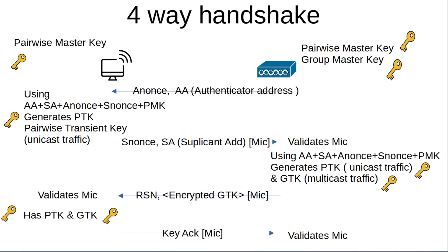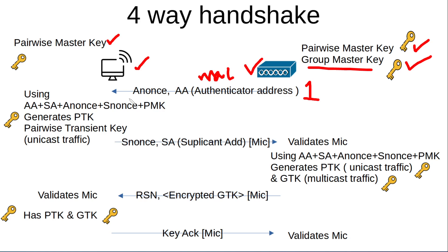At the beginning of the four-way handshake, both the end device and the access point will have the pairwise master key, or PMK. Additionally, the access point will create a group master key in order to encrypt multicast traffic. The first stage of the four-way handshake consists of the access point sending its MAC address — known as the authenticator address — to the end device, along with what is known as an ANonce, a random generated number created by the authenticator that is used only once. At this point the end device has enough information to generate the pairwise transient key, or PTK, that will be used to encrypt unicast traffic for this session.